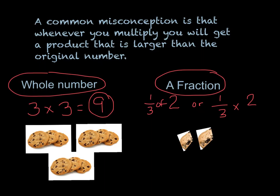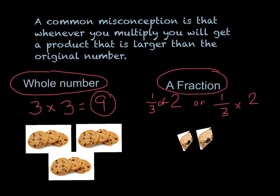So when you are multiplying a whole number by a whole number, your product will be bigger. But when multiplying a fraction by a whole number, or a whole number by a fraction, your product will be smaller.